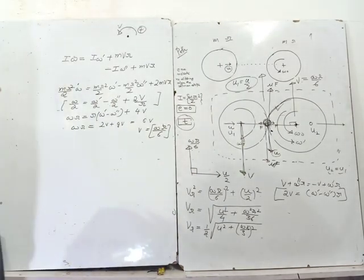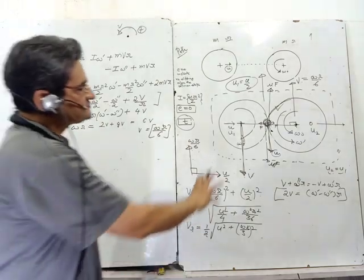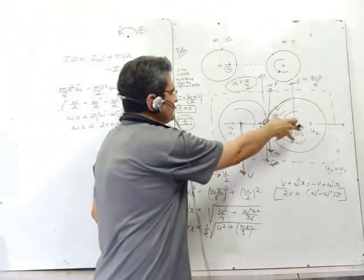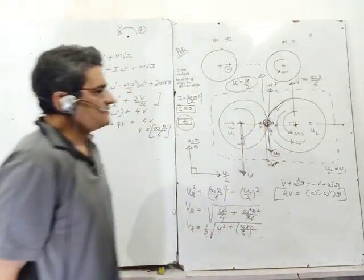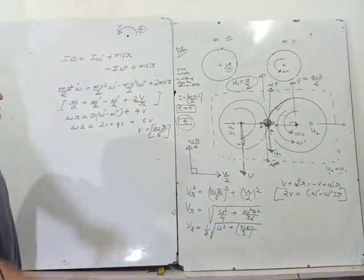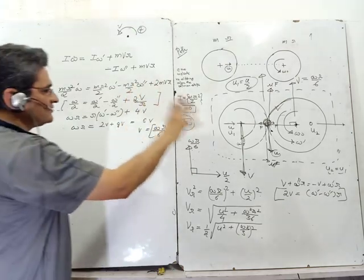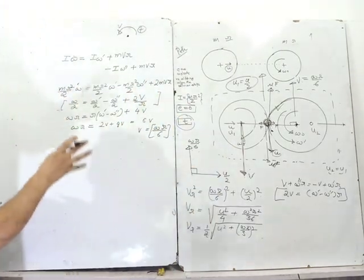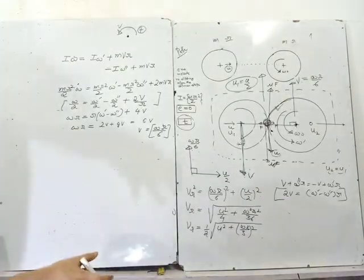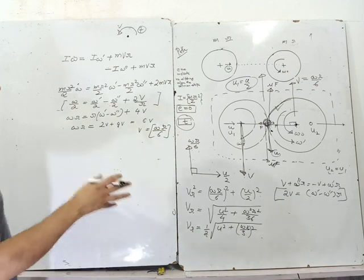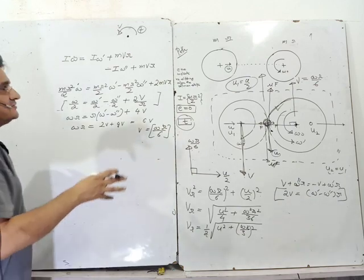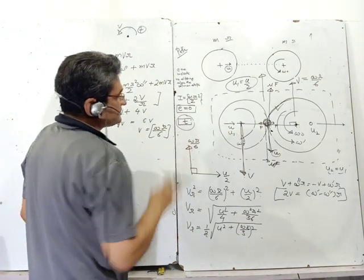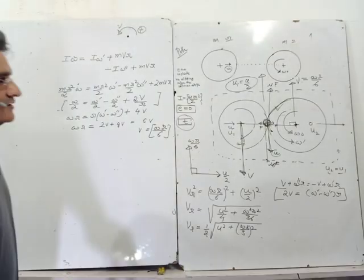So that is one part of the answer — the resultant velocity. Now I have to find one more quantity, which is the angular velocity. I will leave that for you to work out; the lecture is already very lengthy. The ideas have been covered on how to approach and set up the equations for this type of problem.